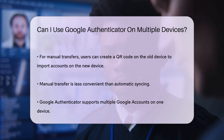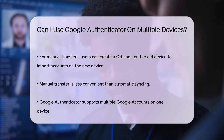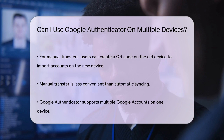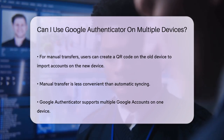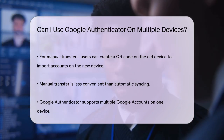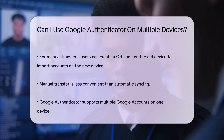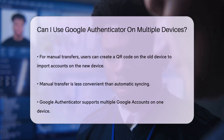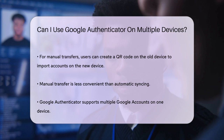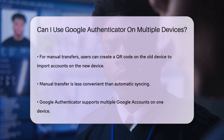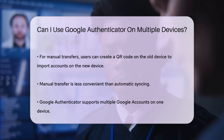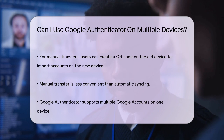Additionally, Google Authenticator can handle multiple Google accounts and display codes for all of them from the same mobile device. To set this up, you simply need to add another account within the app by tapping on your profile picture or initials and selecting Add Another Account.